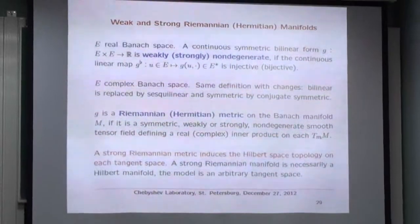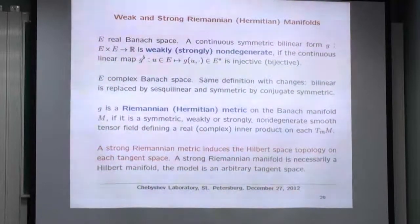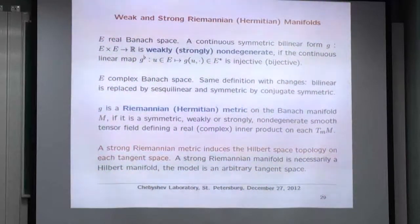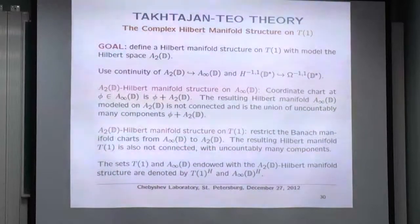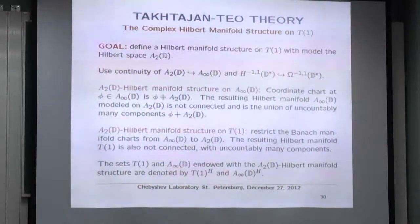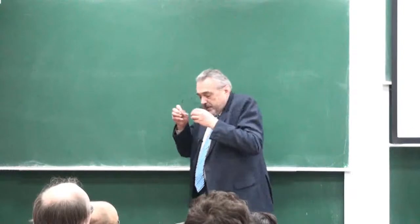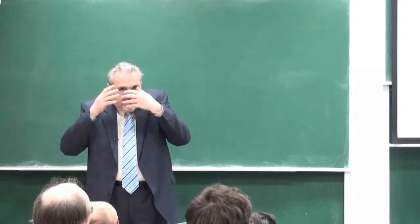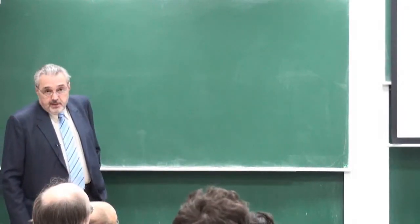I remind you that a weak metric means the map from the space to the dual is injective, and a strong metric means it's bijective. Strong metrics are very rare, but when you have one, things go very well. Takhtajan and Teo looked at the Weil-Petersson metric — there were many other papers by Nag, Sullivan, and others on smooth versions — but the fact is it does not converge. So they said: if you can't beat them, join them. That's exactly what they did.